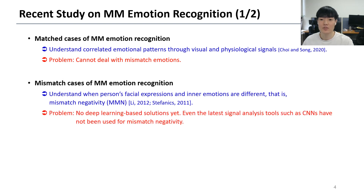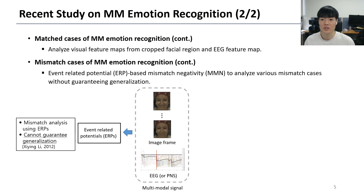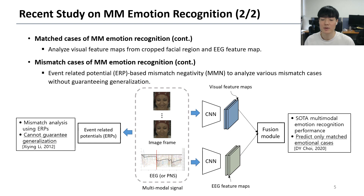Until now, the latest signal analysis tools such as CNN have not been used for mismatched negativity. In other words, multimodal emotion recognition can be divided into matched emotional analysis based on CNN and MMN analysis based on ERP signals.